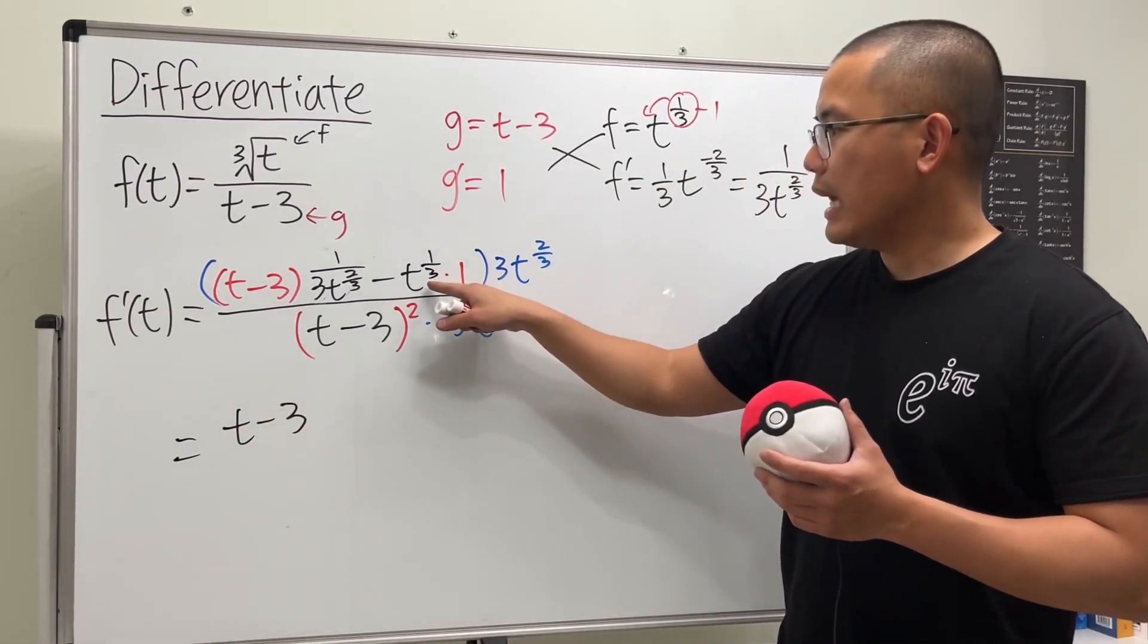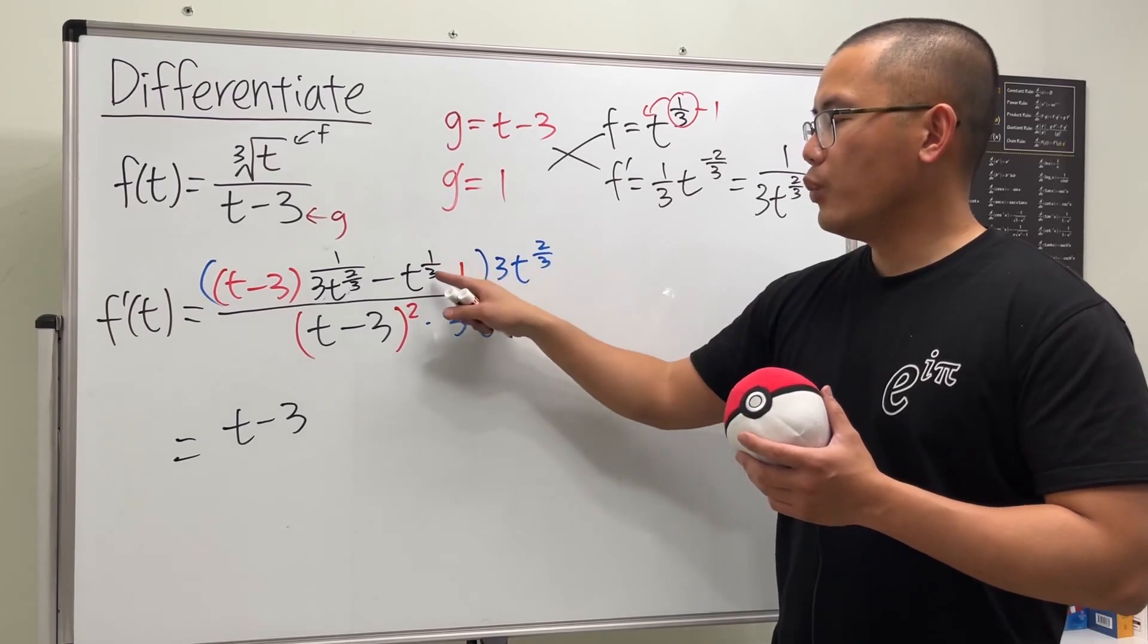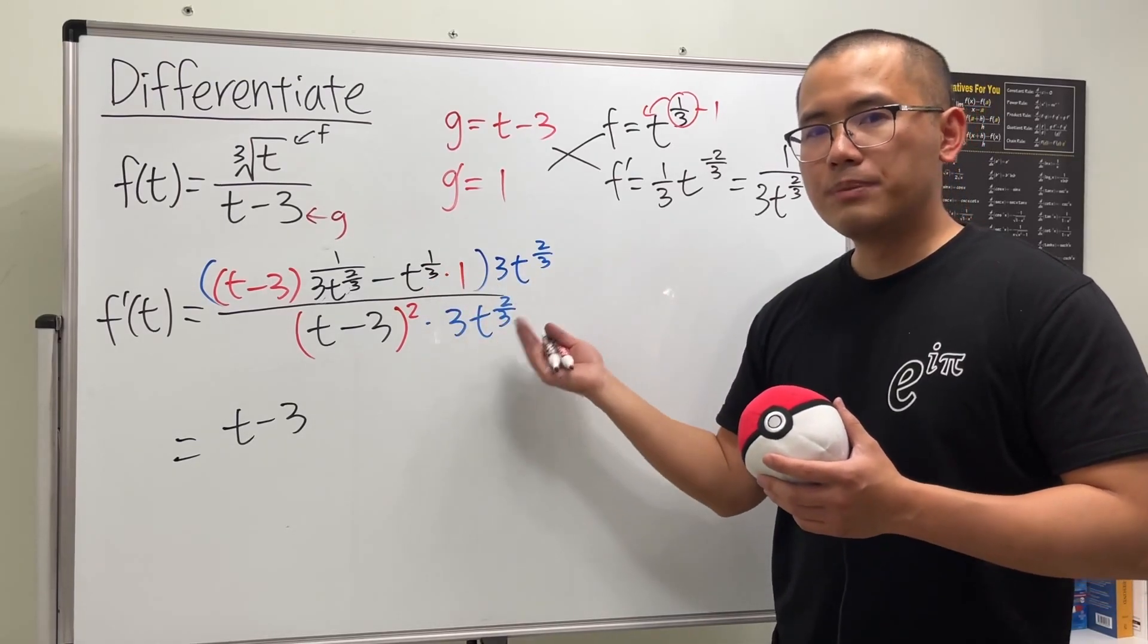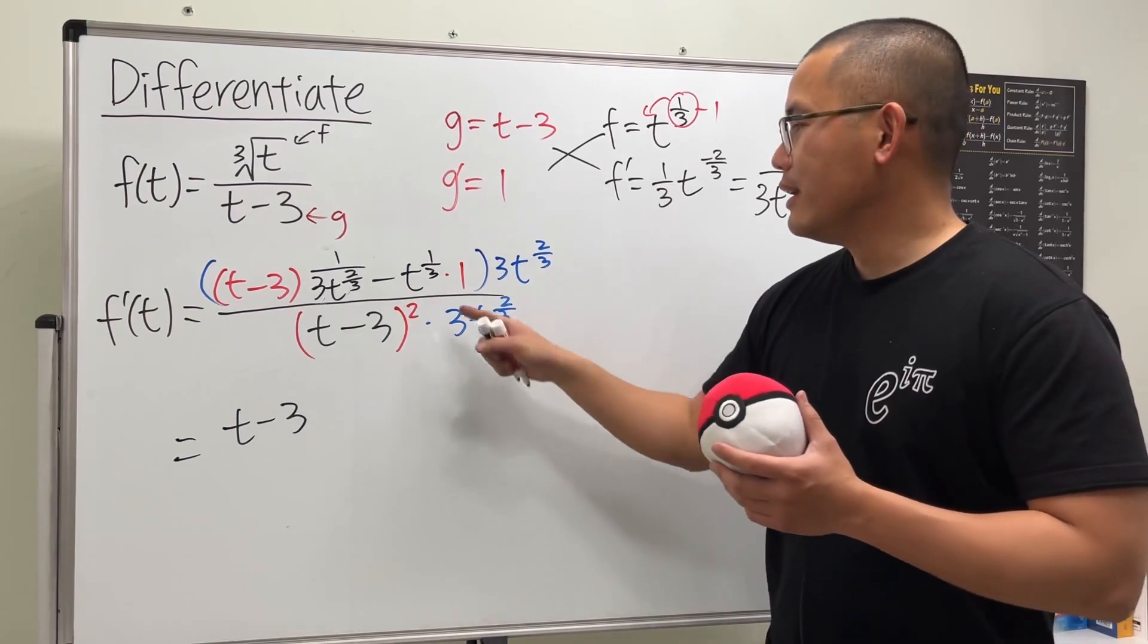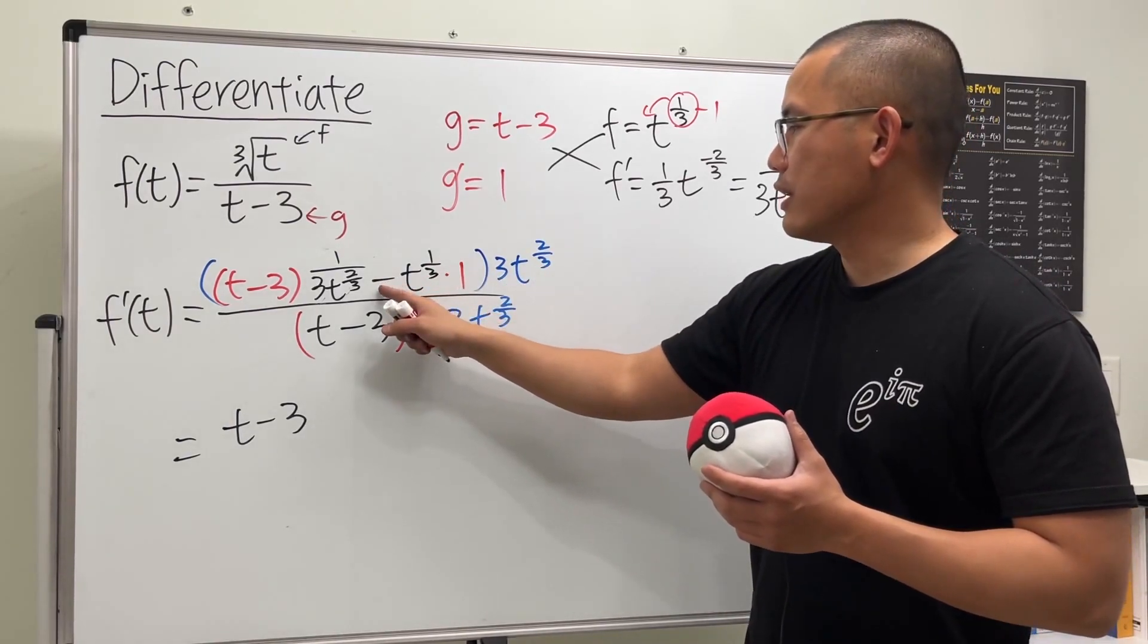Now here we have t to the one-third times t to the two-thirds. We add the exponents: one-third plus two-thirds is three-thirds, which is just 1, so we just have t. And then we have minus three t. So this times that is negative three t.